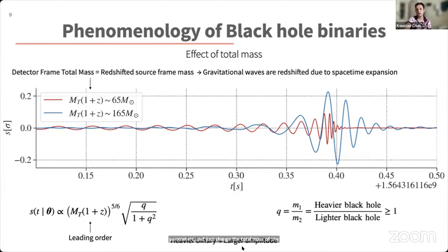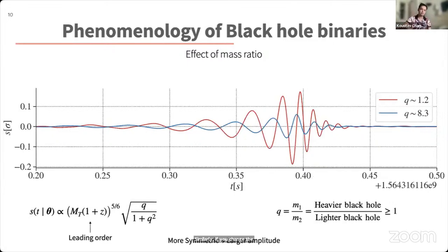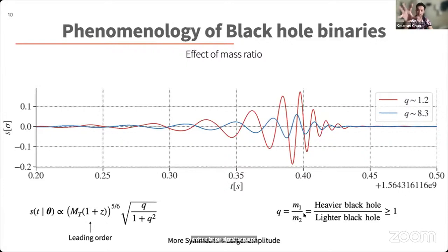Similarly, if you change the mass ratio — which measures how asymmetric the binary is — you see that a more symmetric binary emits a larger signal amplitude. The mass ratio is defined as the mass of the heavier black hole relative to that of the lighter black hole, and is always greater than or equal to one.